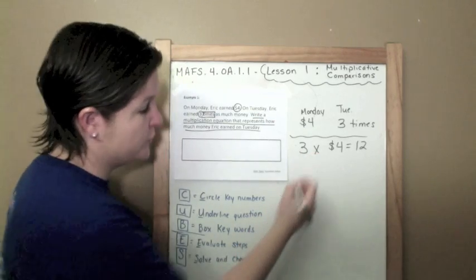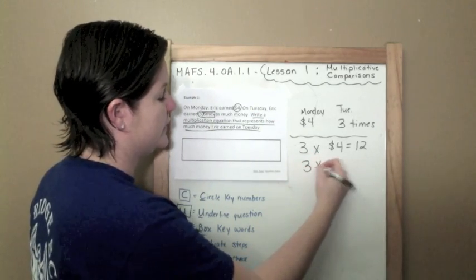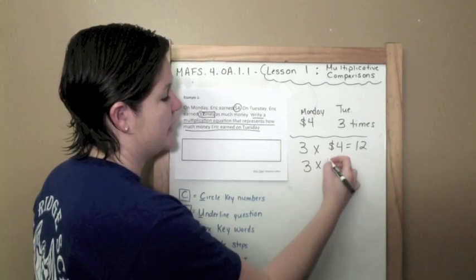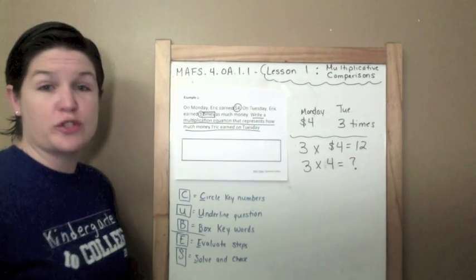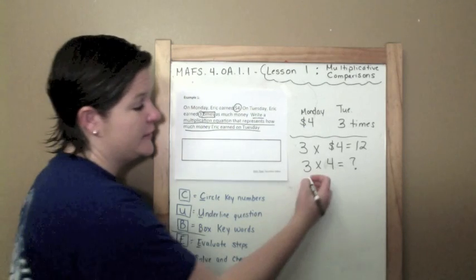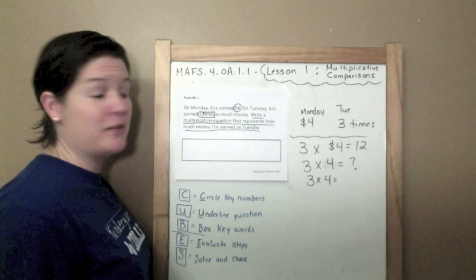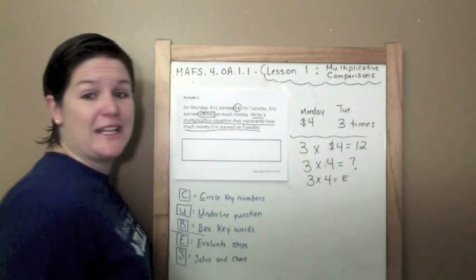You could also do three times—I'm just going to write without the dollar sign—three times four equals question mark, because you're solving for the unknown. And if you want to be really fancy, you could do three times four equals a variable. And we're looking for the money earned, so I'm going to put equals E. That's my variable.